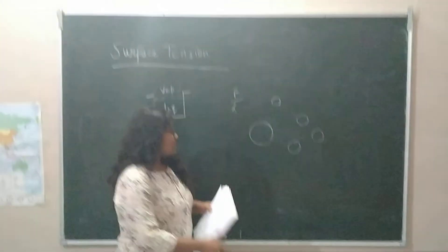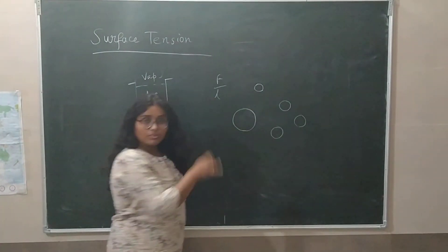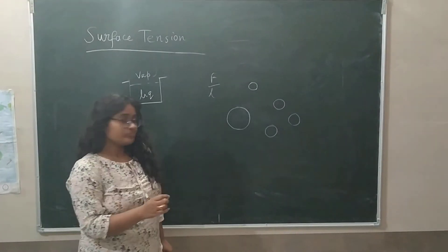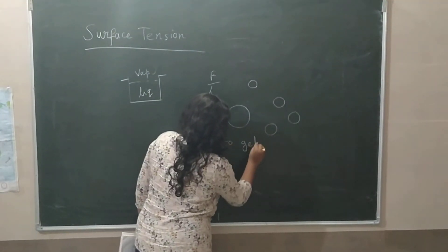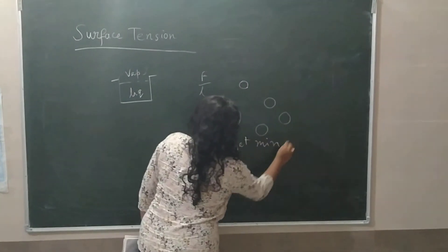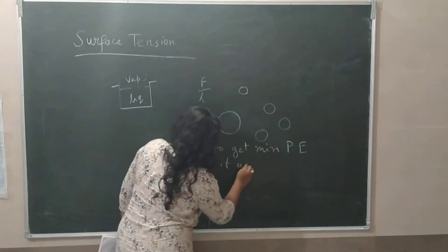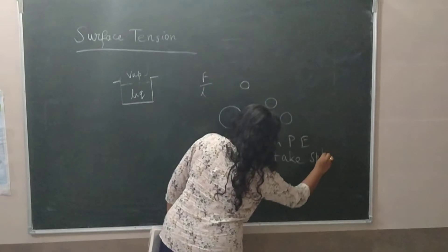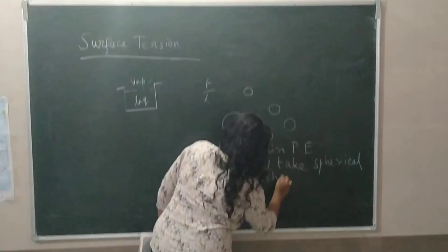It is equilibrium state, that is, the surface will get its minimum energy when the sphere shape is spherical. So to get minimum potential energy, it will take spherical shape.